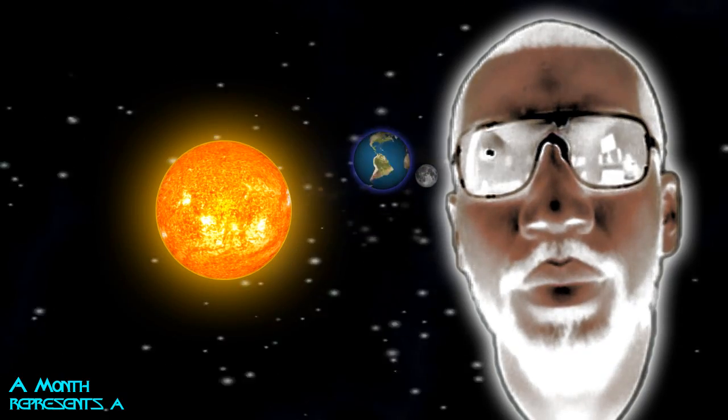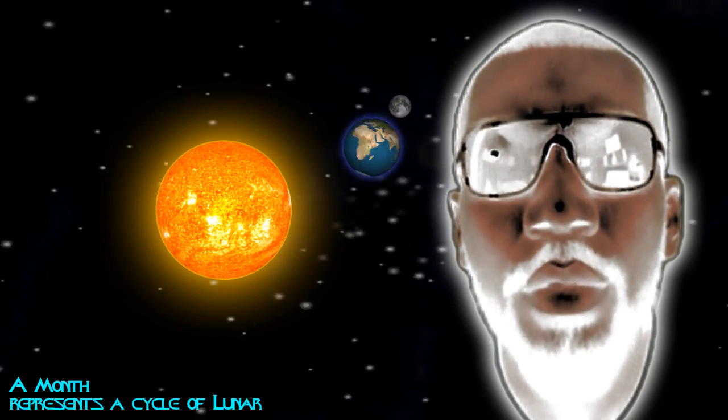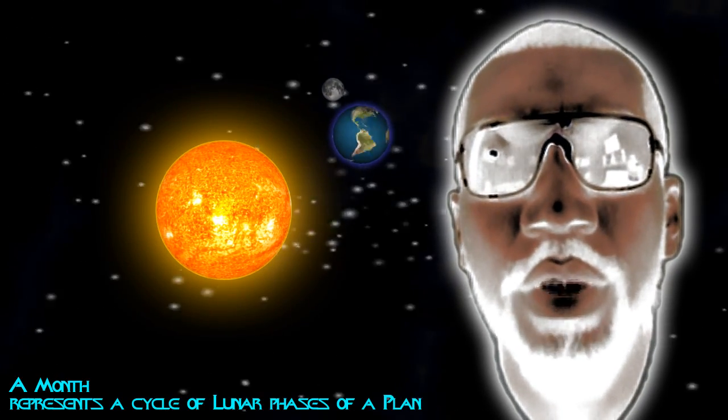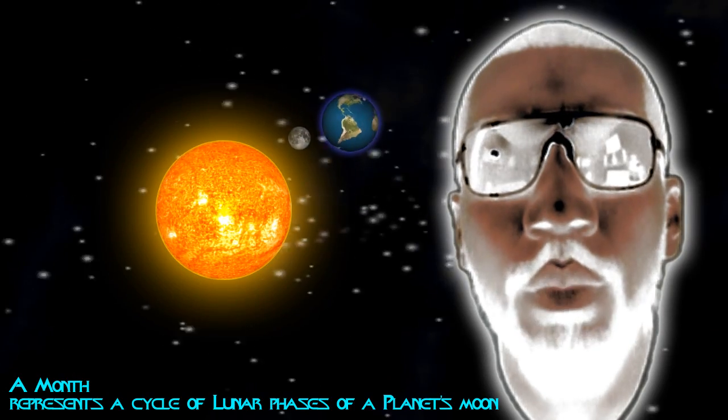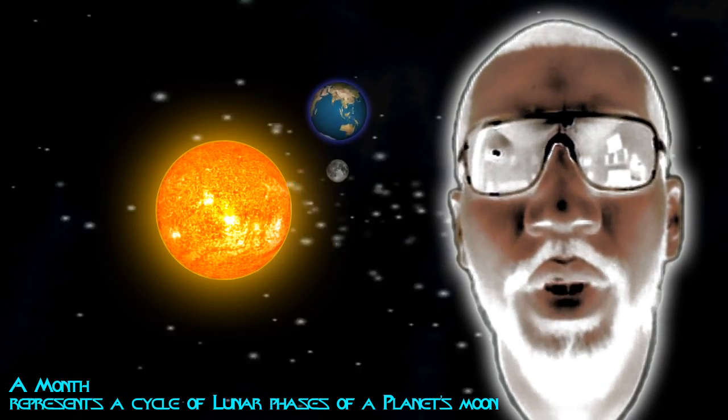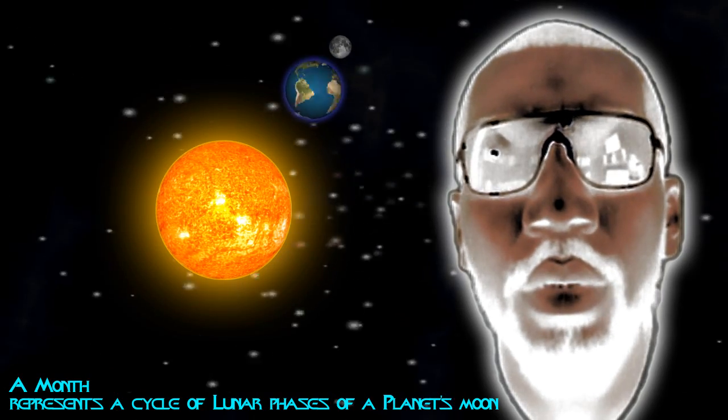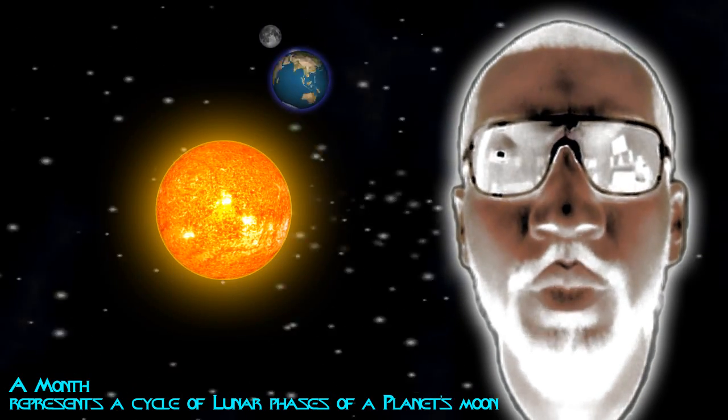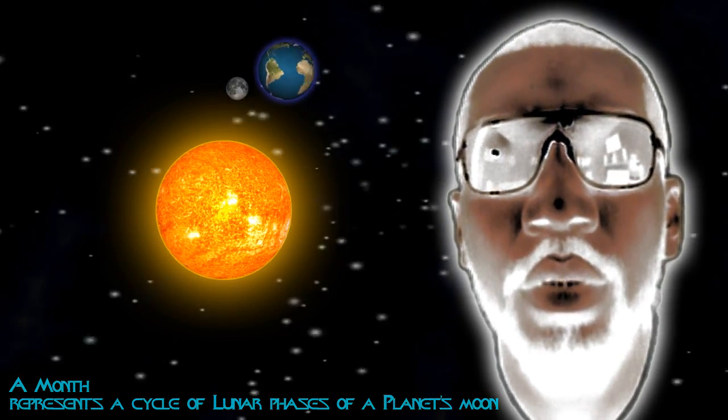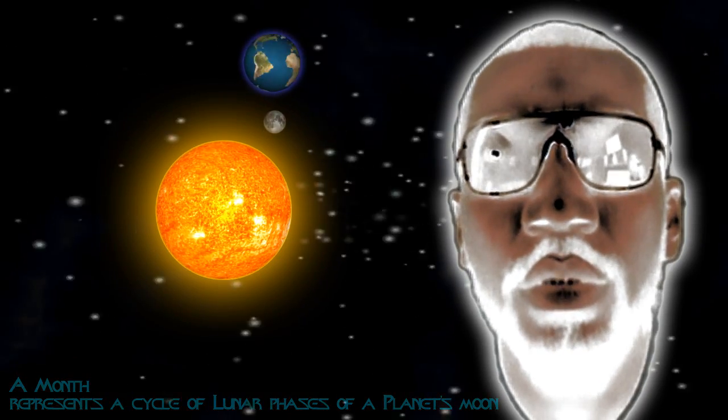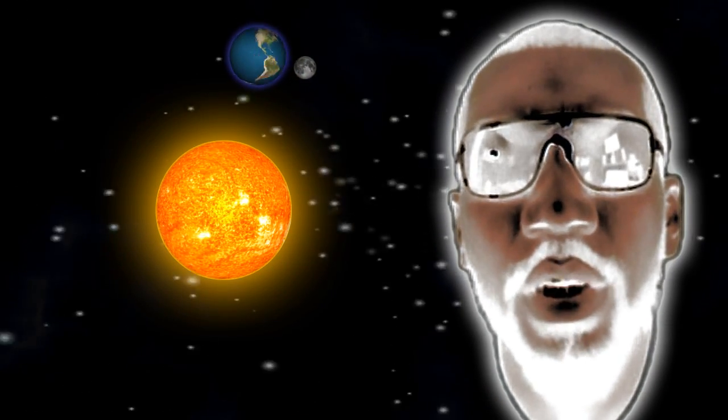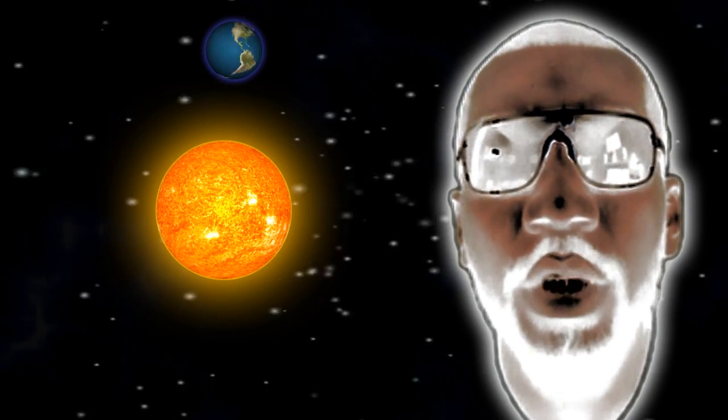A month is the amount of time it takes for the moon to go through its phases as seen from the planet Earth. As the planet Earth rotates around the sun, the moon goes through its phases on average about 12 times. This is why we have 12 months within a year.